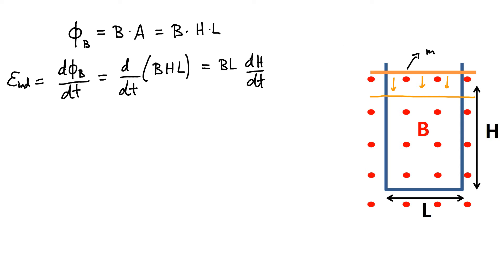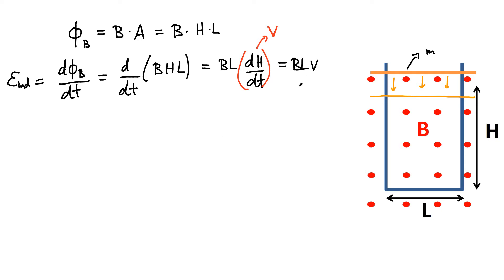Factoring out the constant terms B and L, the remaining term is dH/dt. Now dH/dt represents how the height — or position of the bar — changes with respect to time, which is simply the velocity of the bar. So we rewrite the induced EMF as B times L times the magnitude of the velocity V. That is the induced EMF.